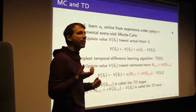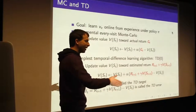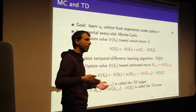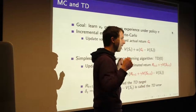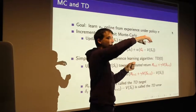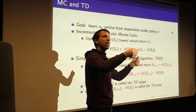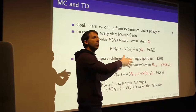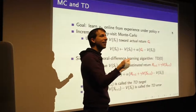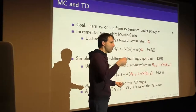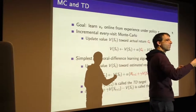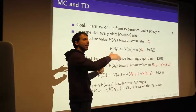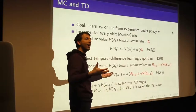Why is this a good idea? Consider driving along and a car hurtles toward you — you think you're going to crash. But at the last second the other car swerves away and you don't crash. With Monte Carlo you wouldn't update your value — no crash happened. With TD learning, you were in a situation where you thought you were going to die, so you can immediately update the value you had before to say that situation was worse than you thought — without needing to wait until you actually crash.